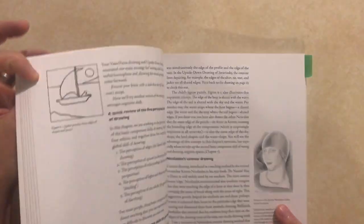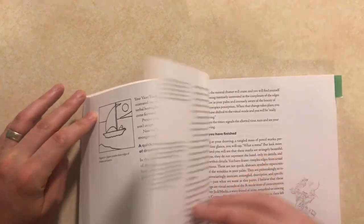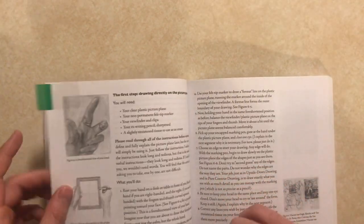In her book, Drawing on the Right Side of the Brain, Betty Edwards explains the use of a tool called a picture plane that has been used by artists throughout history.